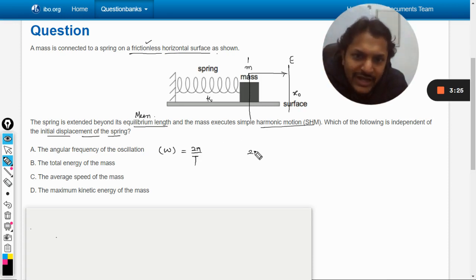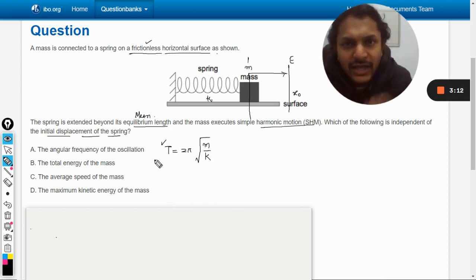As we know, the time period is given by 2π root of m by k. So the time period is dependent on the mass of the body and the spring constant. Thereby, we come to the conclusion that the time period is independent of initial displacement.